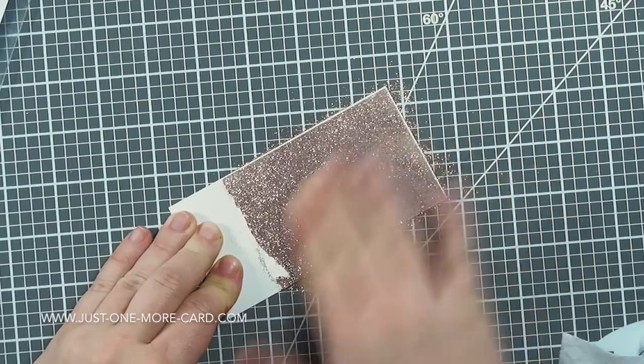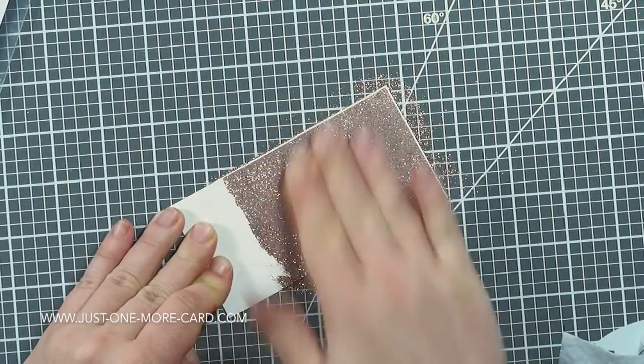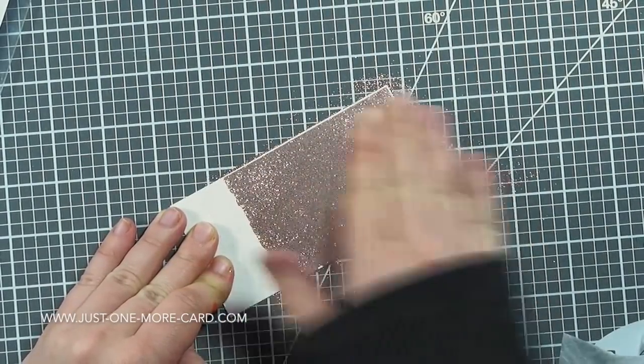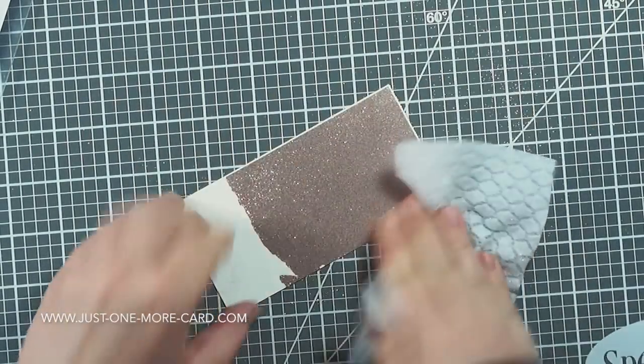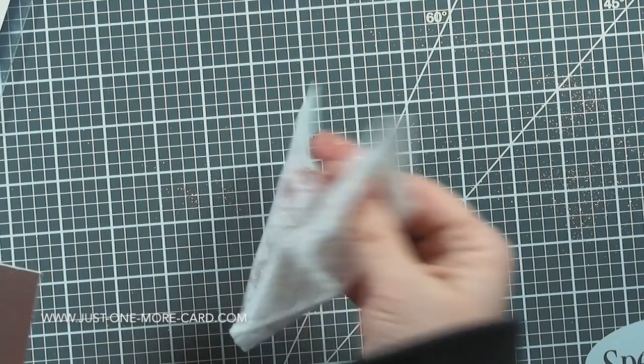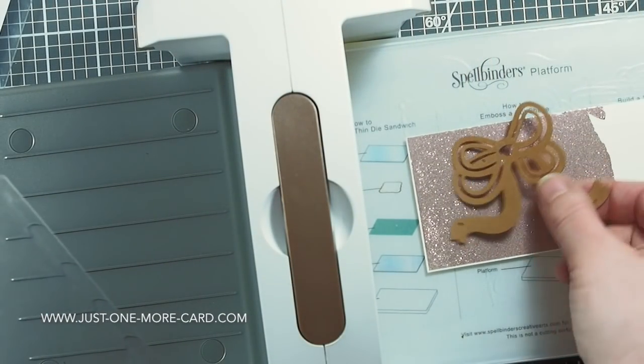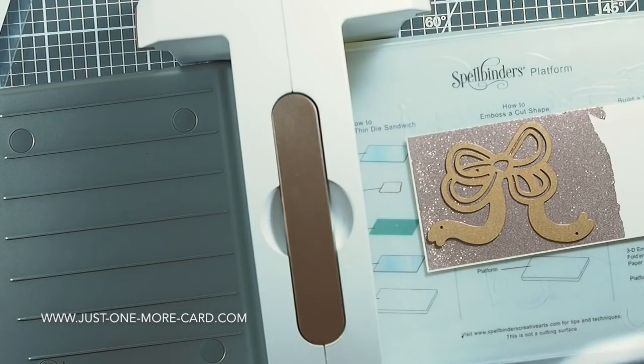After applying the glitter, I always rub it with my hand, just to make sure that the glitter sets, so all the excess is wiped off, and also it starts to glimmer a lot more. It's a lot more shiny once you've set it with your hand, and it doesn't hurt your hand or anything, so you can do that. It's quite safe.